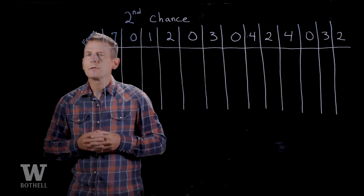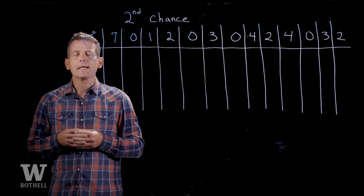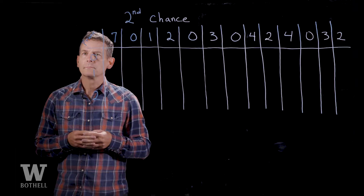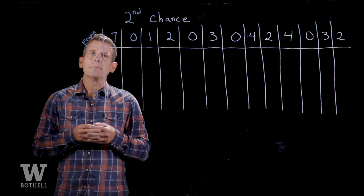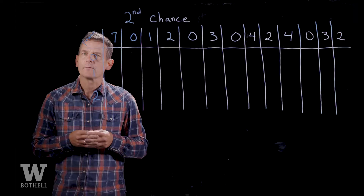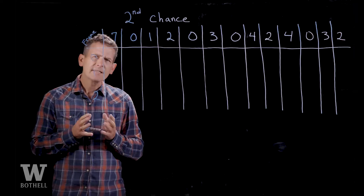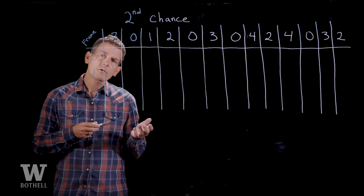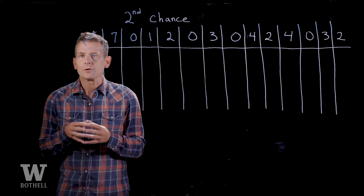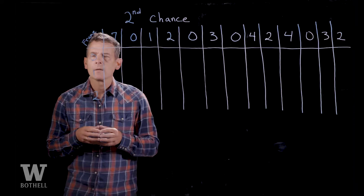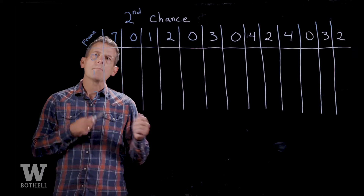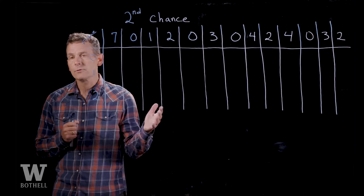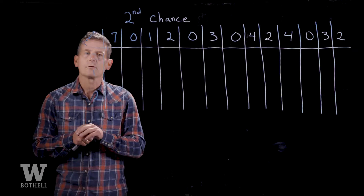Welcome. Today we're going to talk about the second chance replacement algorithm for virtual memory. Let's recall the type of problem that these algorithms are trying to solve. There's a limited number of frames in physical memory on a computer, and virtual memory of a process is much larger than the physical memory of the computer. So pages have to be swapped back and forth from disk into the physical space.